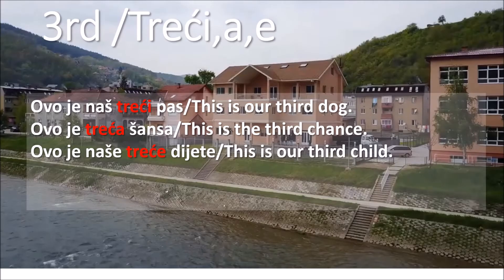Treći, treća, treće. Example: ovo je naš treći pas - this is our third dog. Pas is our subject in this sentence. The subject is masculine. Therefore, we're using treći.